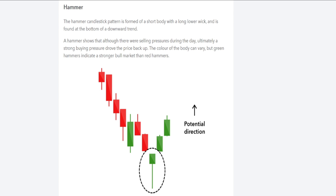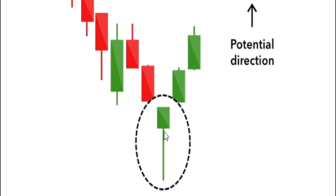That's a good transition into discovering what these particular candle formations mean depending on their wicks, their colors — whether they're red or green — or large wicks on the bottom or top. I'm here on IG.com, and I have a link to this in the description of this video. We'll start with the hammer. The hammer is going to be at the bottom of a move down — we have an open with a wick at the bottom and a close at the top with no wick at all, indicating continued upward momentum.